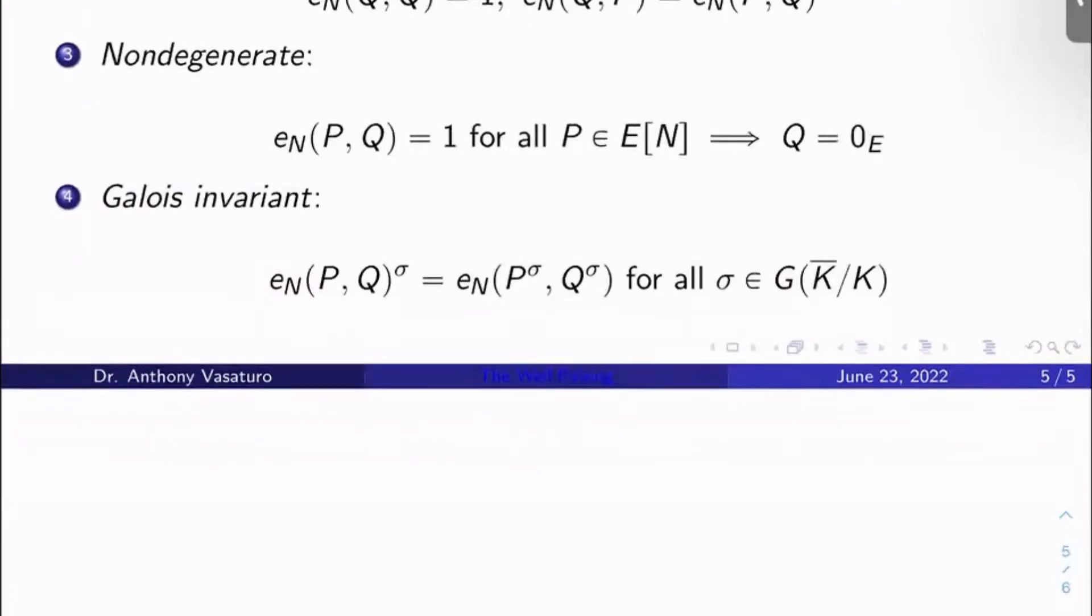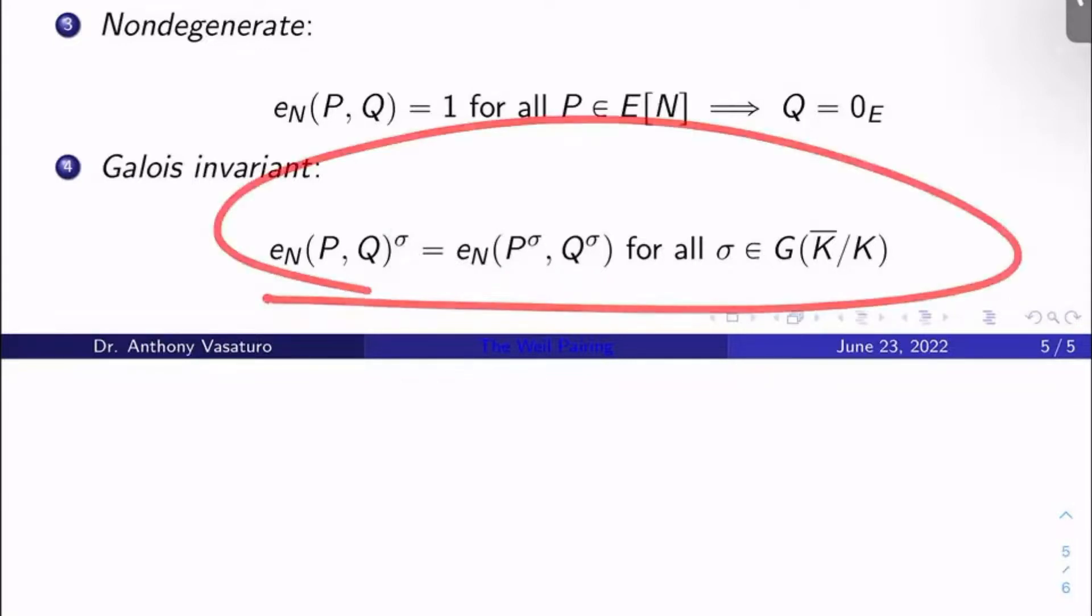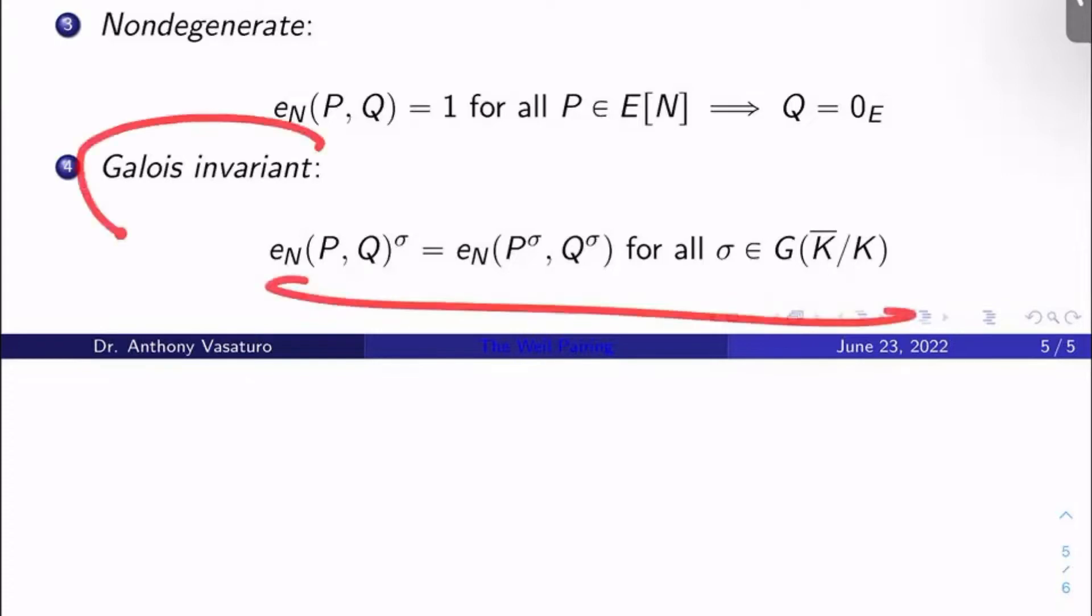If I take e_N(P,Q) and I act on it with σ, an element of the absolute Galois group of K, I can move the σ inside. The σ commutes with the Weil pairing. I just get e_N(P^σ, Q^σ). And it's this property here that allows you to see, for example, that P-th roots of unity are in the P torsion field of the Frey curve, for example, or elliptic curves over Q in general. It's this property right here that allows you to see that these P-adic Galois representations attached to elliptic curves, cyclotomic determinant, P-adic cyclotomic determinant. This is a very crucial property. This is one of the star properties of the Weil pairing.